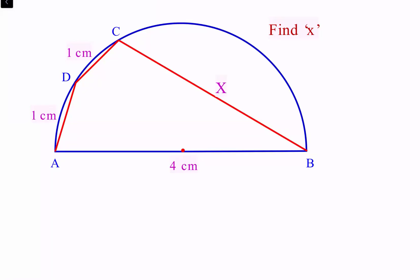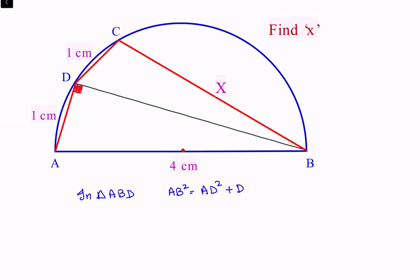To start with, we will use the fact that AB is the diameter, and the diameter subtends an angle of 90 degrees on the circumference. So if we join BD, this angle is 90 degrees. Using the Pythagorean theorem in triangle ABD: AB² = AD² + DB², so 4² = 1² + DB².